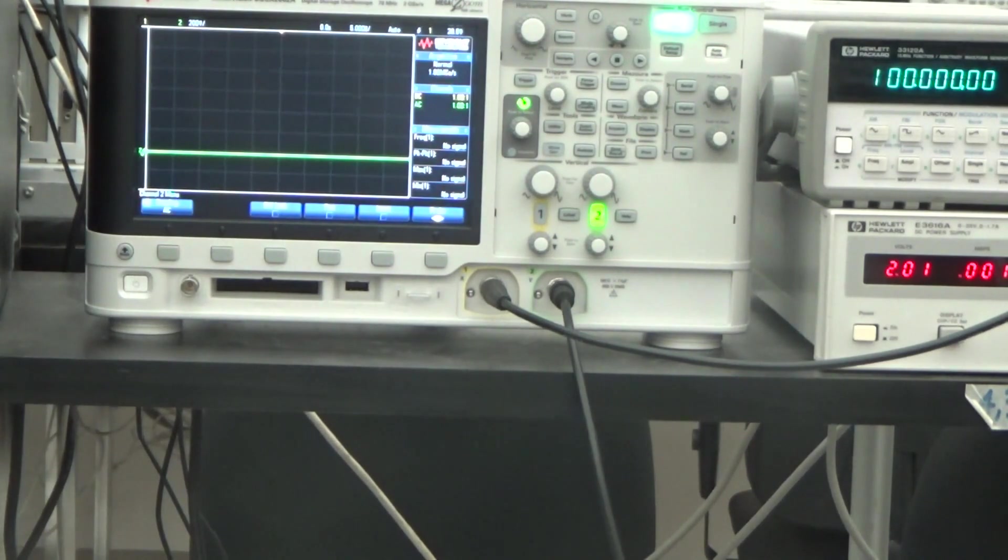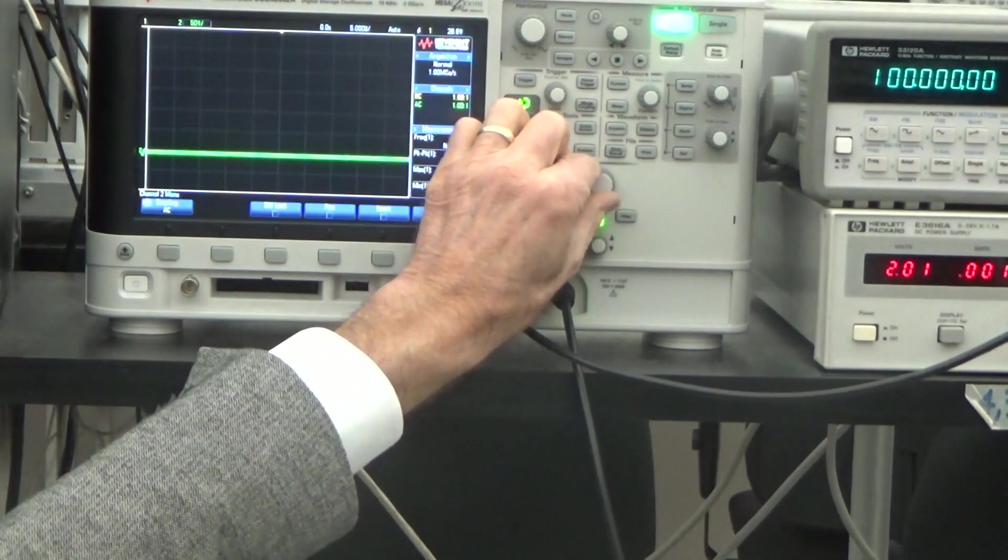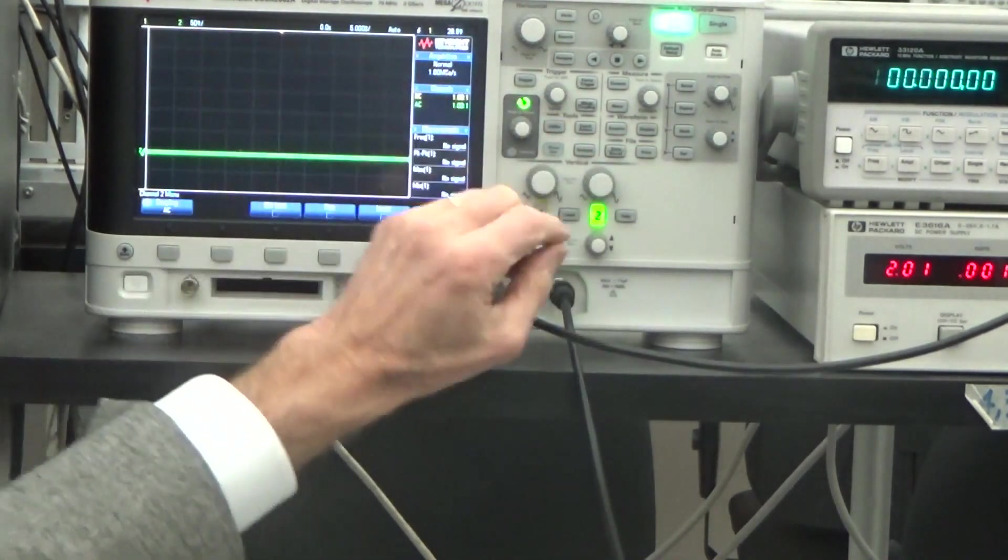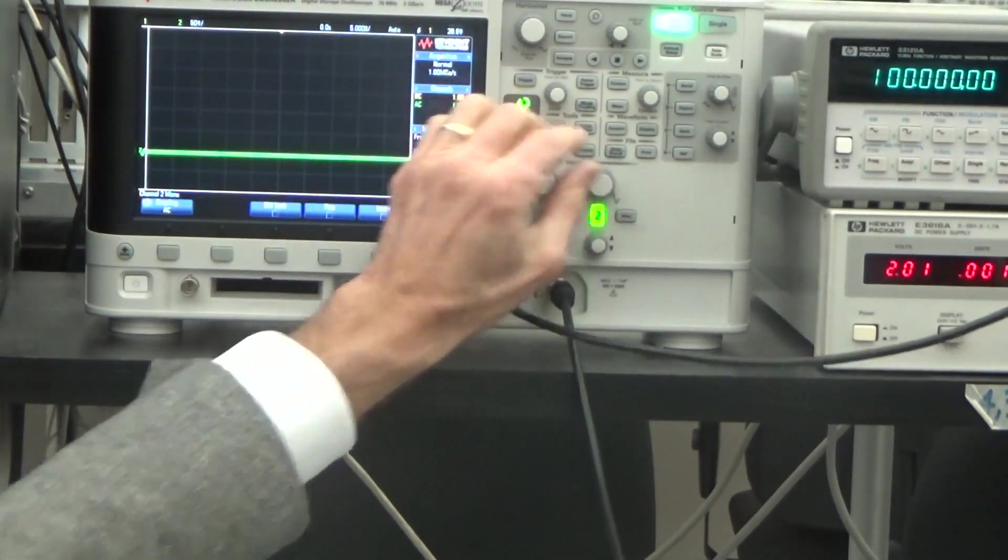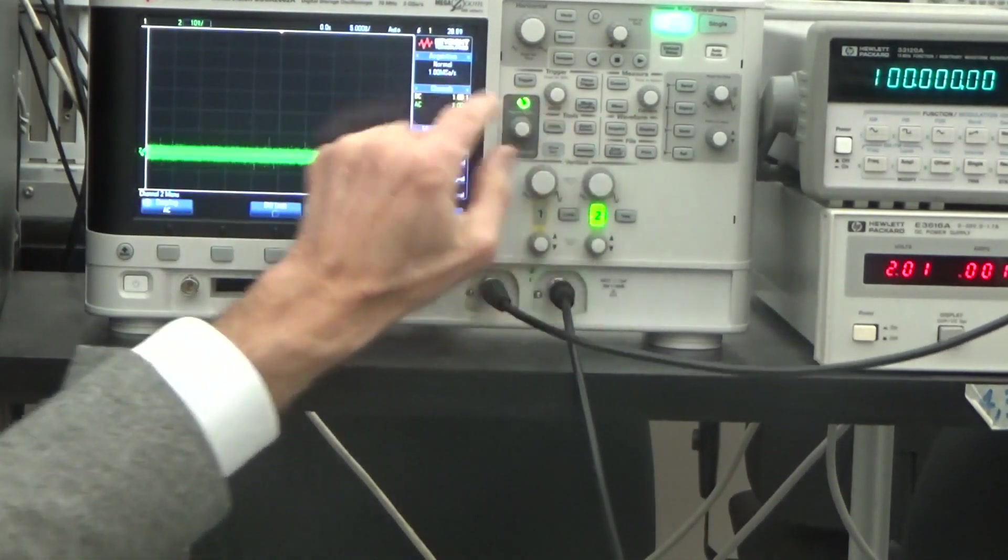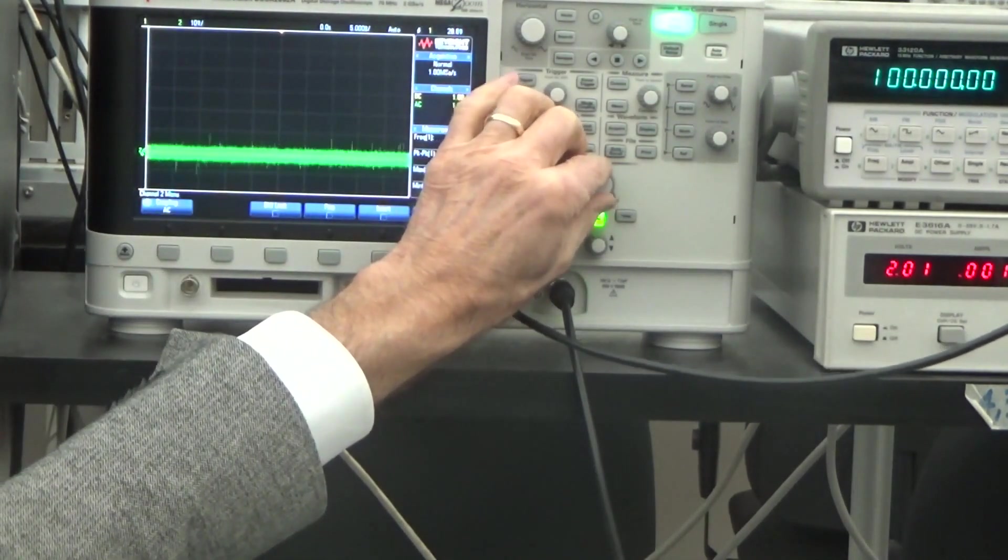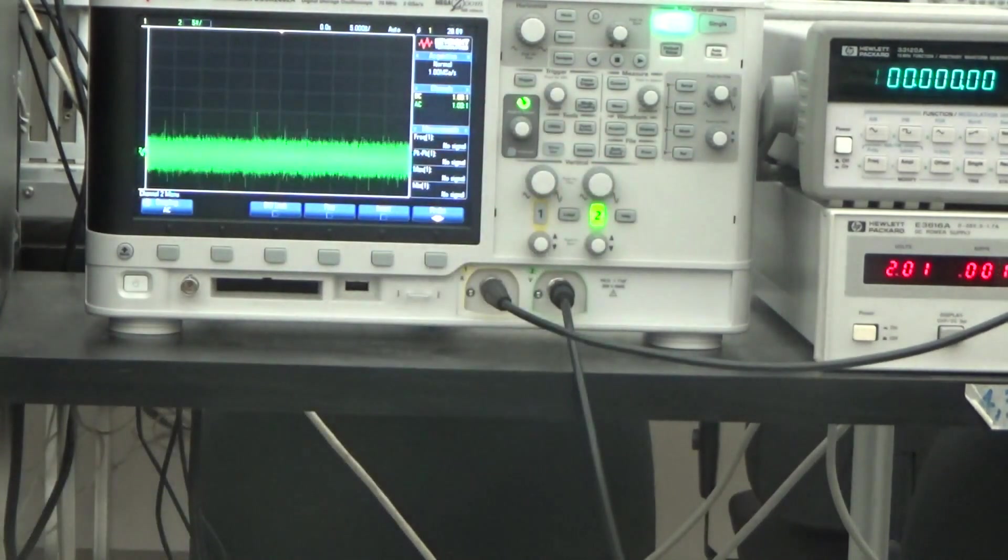But the beauty of this is now that I can increase the sensitivity a lot. And I'm down to 50 millivolts per division now. And you can see that the line is getting a little fatter and fatter yet. And I'm down to 10 millivolts per division. And you can now see that there is some noise on that 2 volt level that is coming out of the power supply. So it's not a perfectly flat signal.